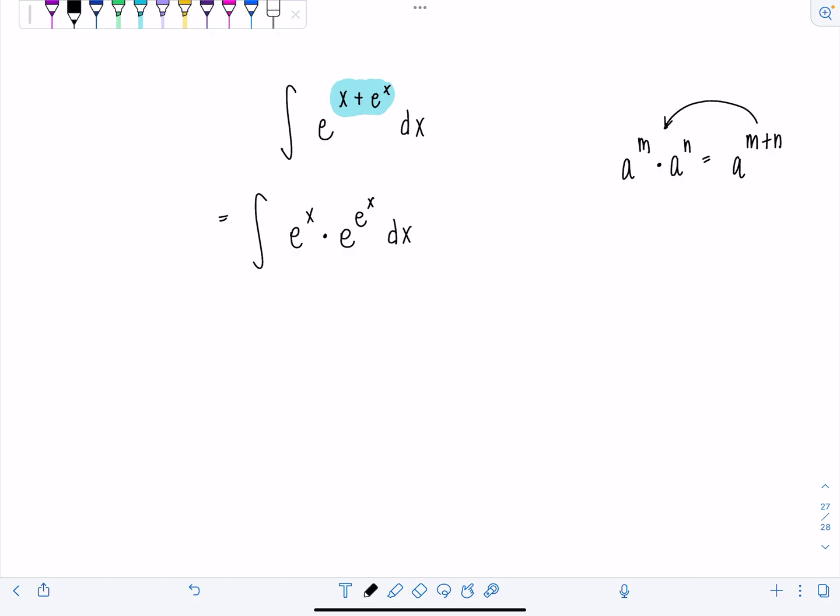Then from here, you're going to use good old u substitution. So we're going to let u equal e to the x. That means du is e to the x dx. Lo and behold, that's exactly what we have right here.